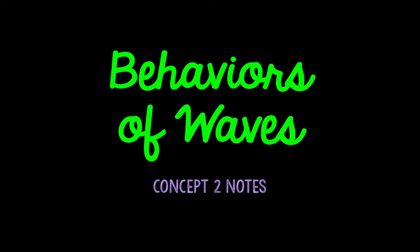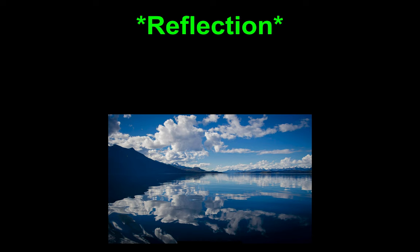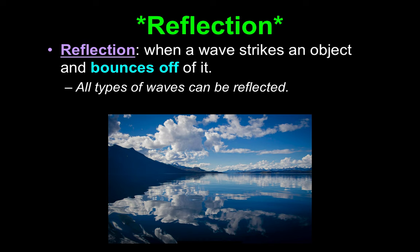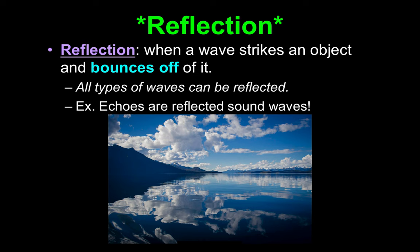First: reflection. This is a vocabulary word — I will add it to Quizlet. Reflection is when a wave strikes an object and bounces off of it. We've been talking about waves for the past week, so a wave moves and then bounces off — that's called a reflection. All types of waves can be reflected: light waves, sound waves, any type of wave. A wave in the ocean can be reflected. Echoes are reflected sound waves — you scream and you hear it come back, bouncing off something and returning to your ears.